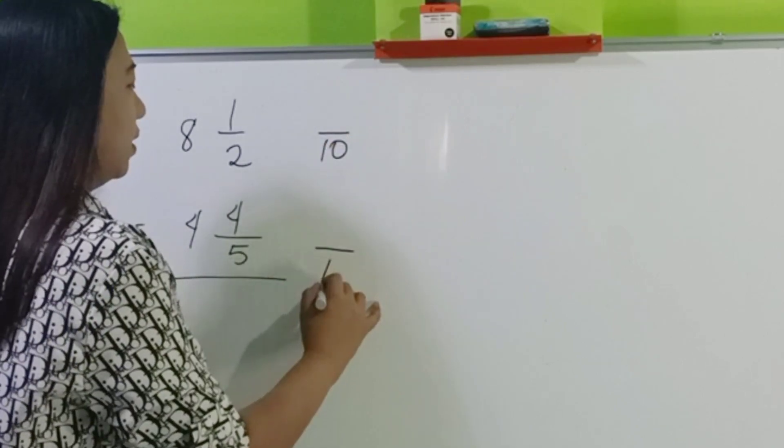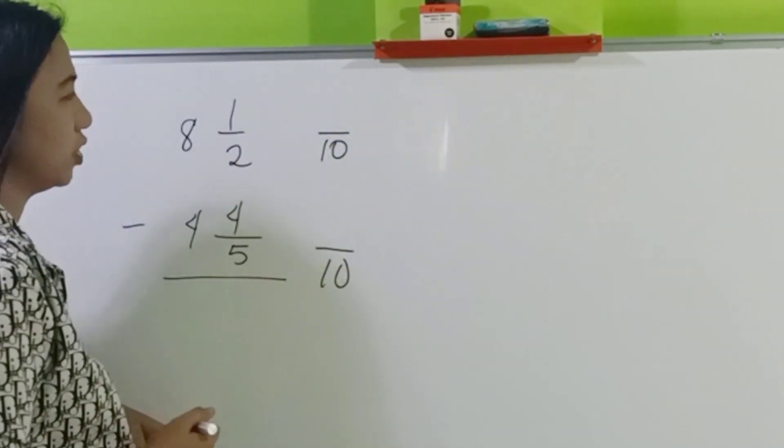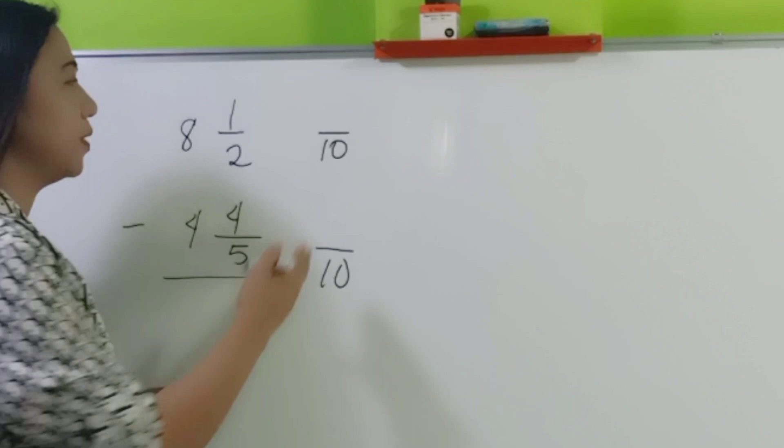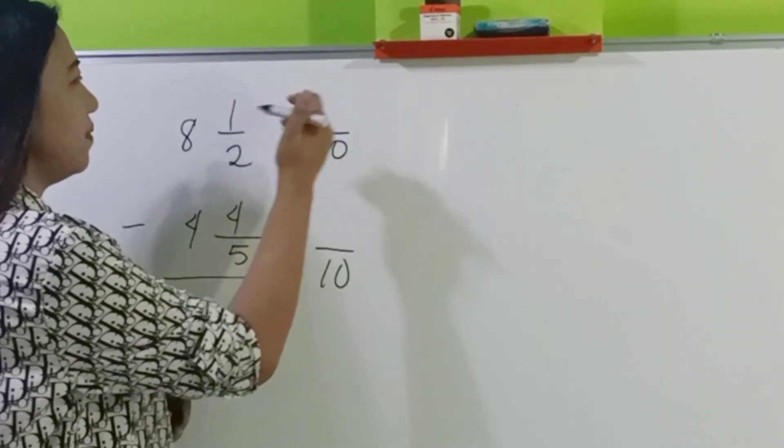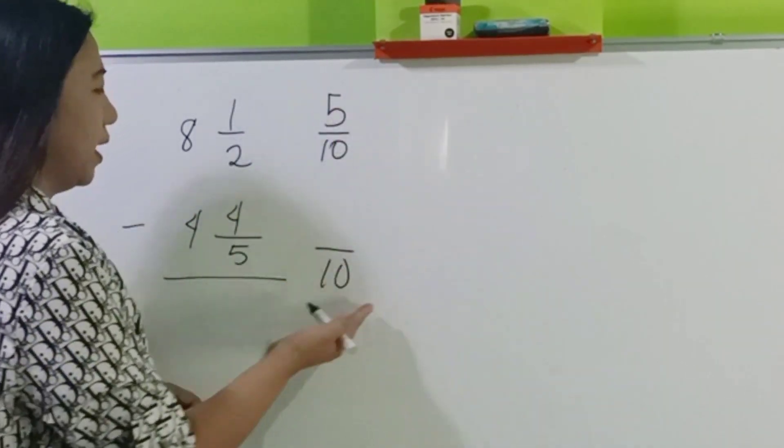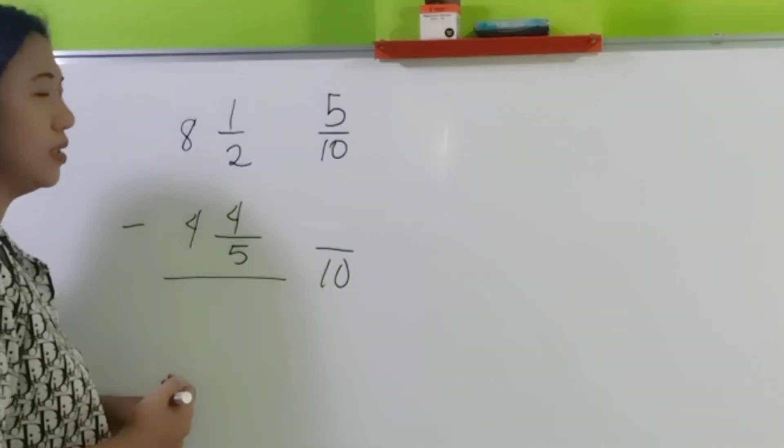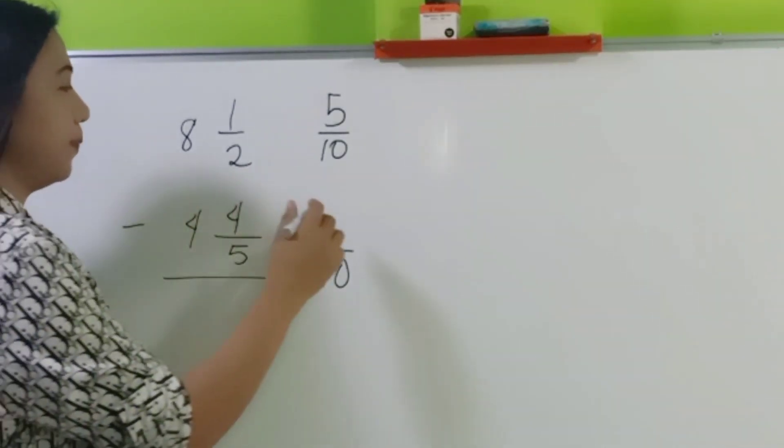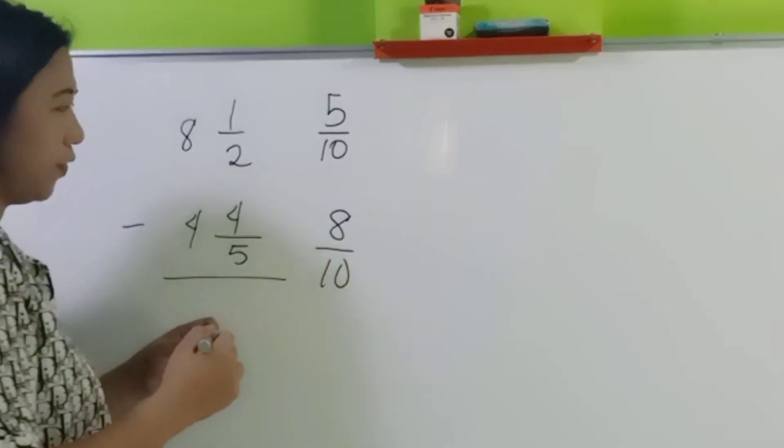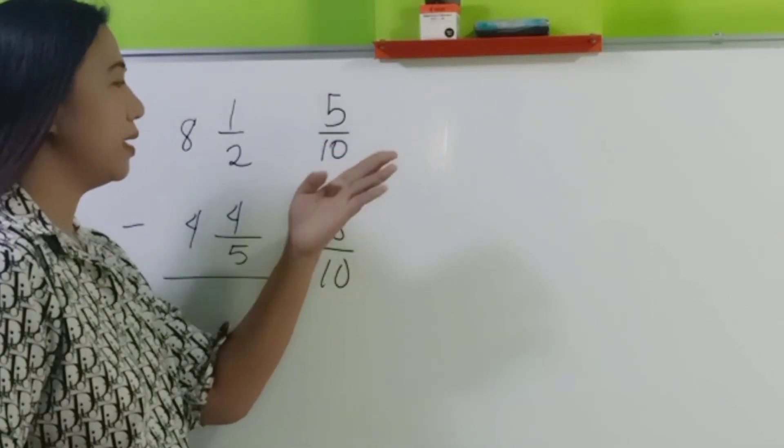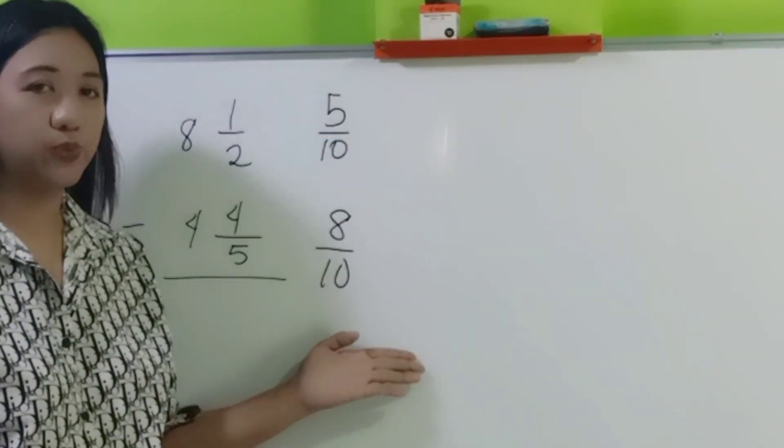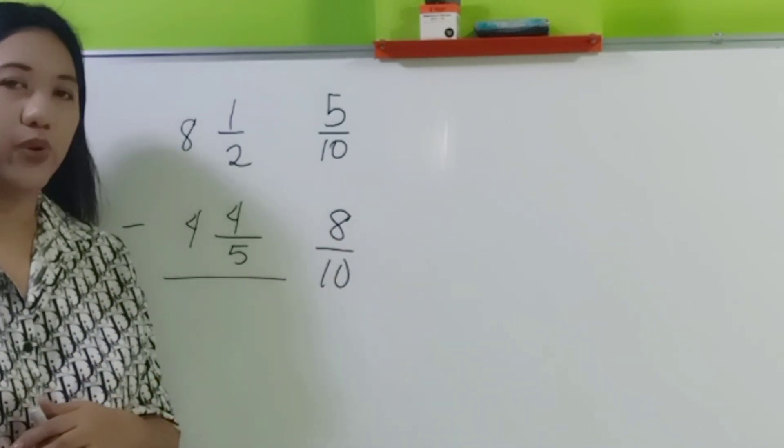Good. So let's change these fractions into their similar forms. 10 divided by 2, 5 times 1 is 5. 10 divided by 5, 2 times 4 is 8. Now if you observe, the minuend is less than the subtrahend. So we need to borrow.